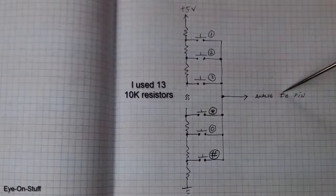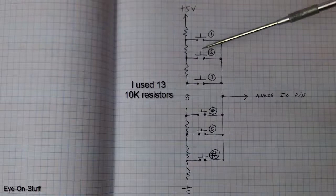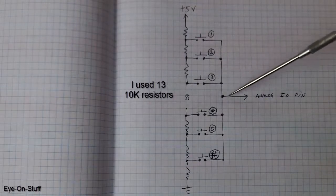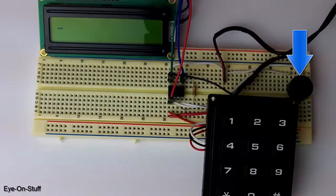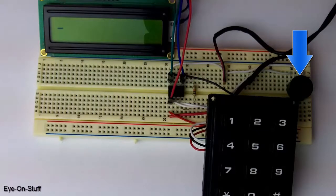So each button will send a different voltage to the analog I/O pin. Next I wrote a simple program and burned it into the microcontroller. Note that I added a buzzer for audio feedback. It's to let me know when the program recognizes the press of a button.